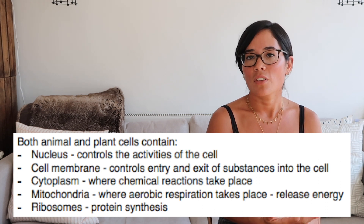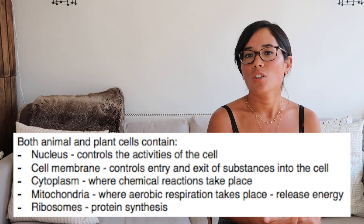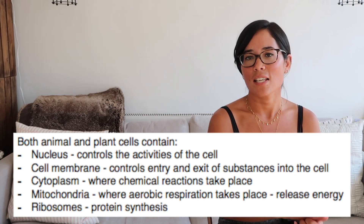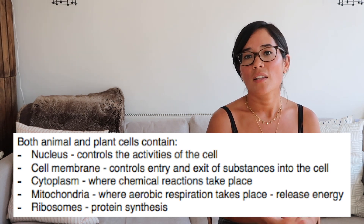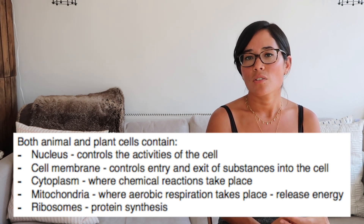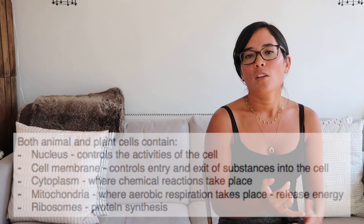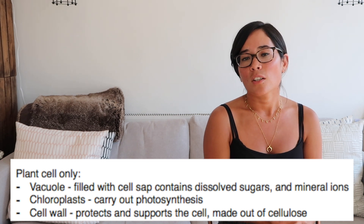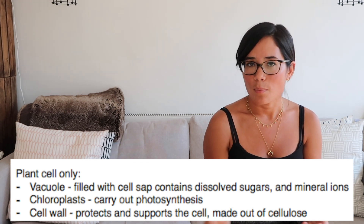We now need to look at the role of each of those organelles, because it's key that you get these basic questions right in your exam. What does the nucleus do? It controls the activities of the cell. What does the cytoplasm do? It's where chemical reactions take place. What is the role of the cell membrane? It controls what enters and leaves the cell. What is the role of ribosomes? It's where protein synthesis takes place — i.e. it's where proteins are made. The cell wall is made out of cellulose and protects and supports the cell. The vacuole is filled with cell sap, which helps to maintain the structure of the cell.